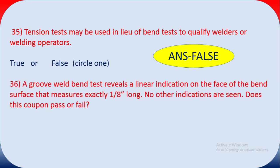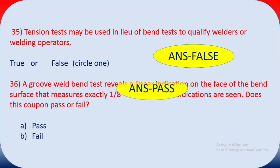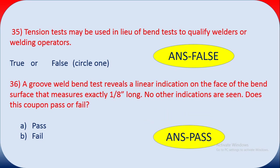Question thirty-six: a groove weld bend test reveals a linear indication on the face of the bend surface measuring exactly 1/8 inch long. No other indications are seen. Does this coupon pass or fail? Per ASME Section 9 acceptance criteria, the answer is that it fails.